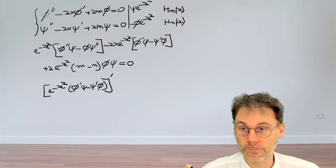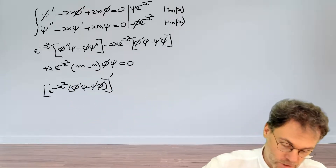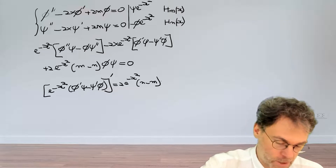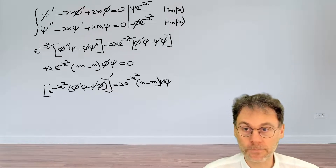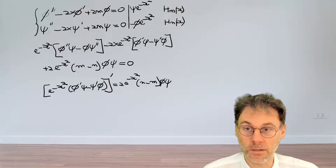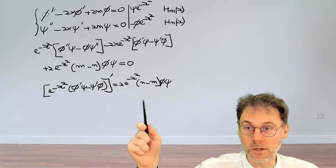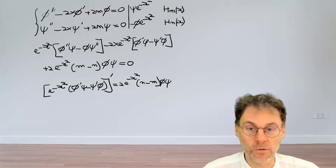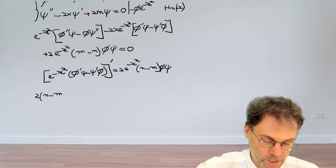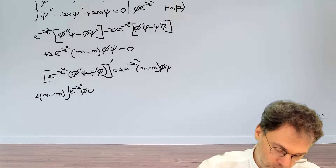So these two terms combine to the derivative of that product, which is very useful. Moving the final term to the other side gives us: d/dx [e^(−x²)(φ' ψ − ψ' φ)] = 2(n − m) · e^(−x²) · φψ. Since we have a total derivative on the left-hand side, we integrate both sides, giving us 2(n − m) times the integral of e^(−x²) φ ψ dx on the right.